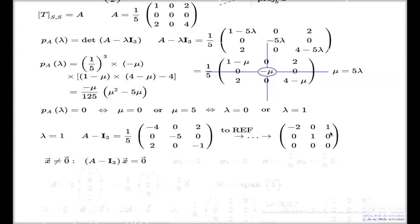Here it is: negative 1, 0, 1 is the first row, just scaled by one half. 0, 1, 0, and the last one is 0. We have a non-leading column, which means we need to parametrize things. We will always have a non-leading column as a matter of fact when you go for the eigenvector.